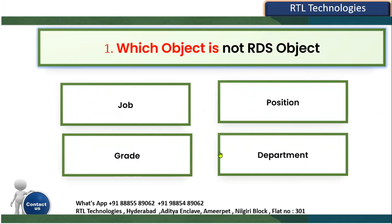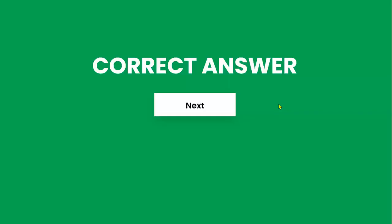Out of the four options, position is NOT the reference data set object. The remaining three — job, grade, and department — are all reference data set objects. In fact, the four RDS objects are job, grade, department, and location. Position is not included; position is directly associated with the business unit.